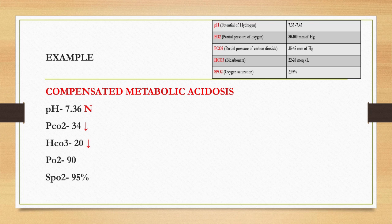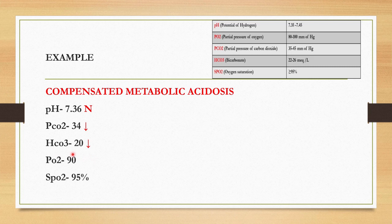Let's see one more example. pH is 7.36, PCO2 is 34, bicarbonate is 20. Here pH is 7.36 which is normal. PCO2 is 34, that is low. Bicarbonate is 20, that is also low. As I said, if pH is normal, that is fully compensated. So it is compensated metabolic acidosis.